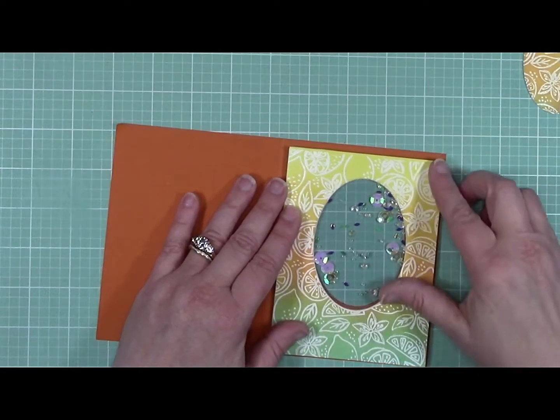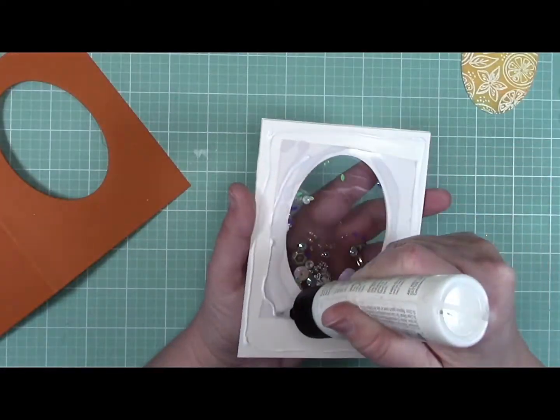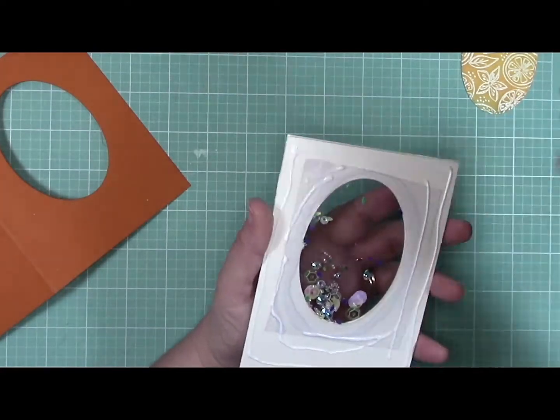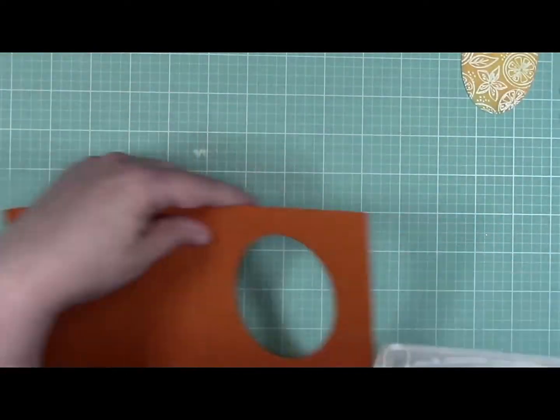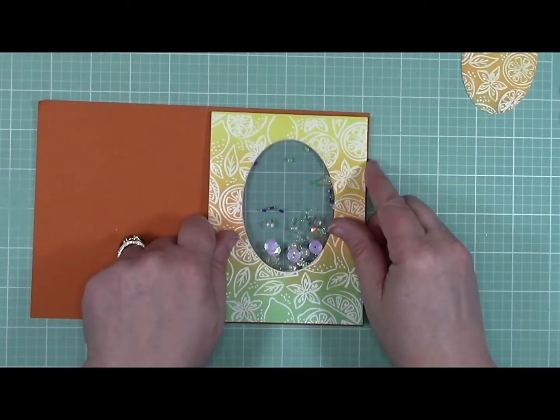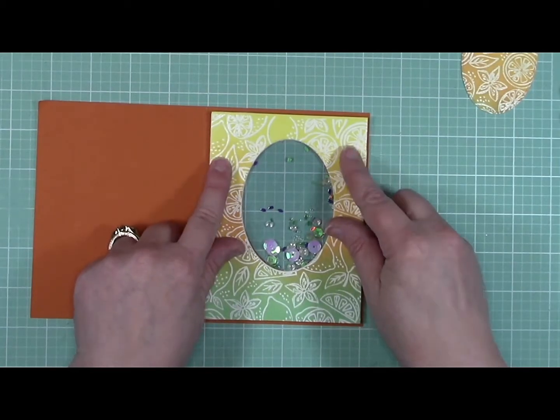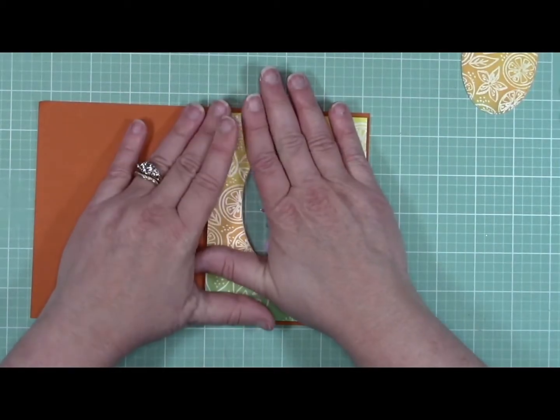Once that was all done, then I could attach the front panel with the shaker in it on the top of my card base. And you can see how you will be seeing through that, and that's what makes this card kind of cool.